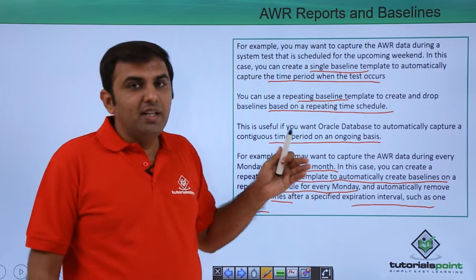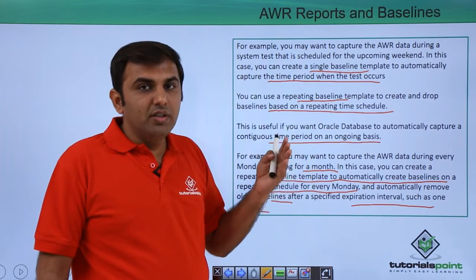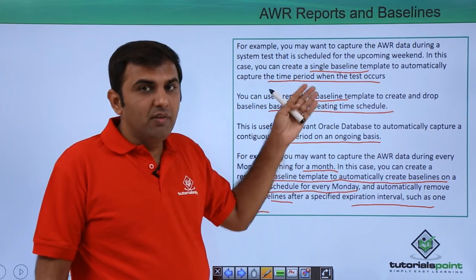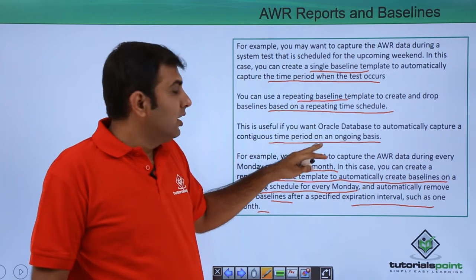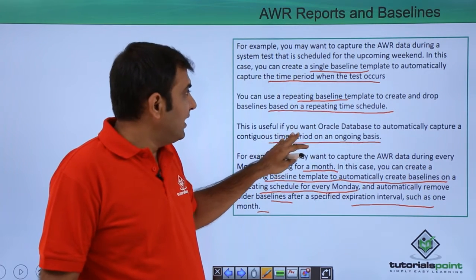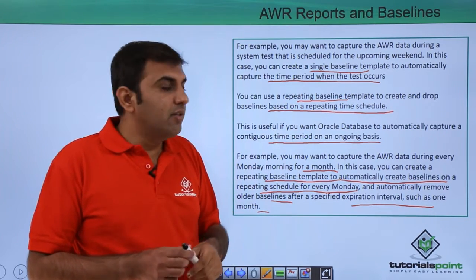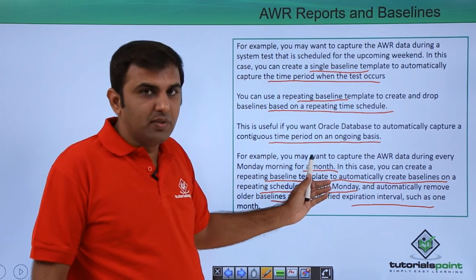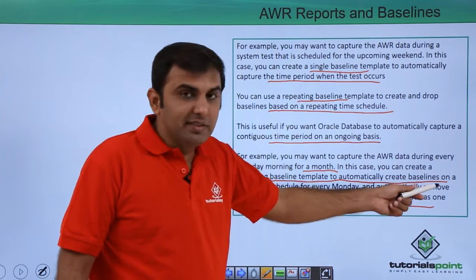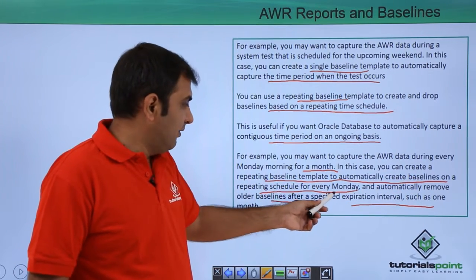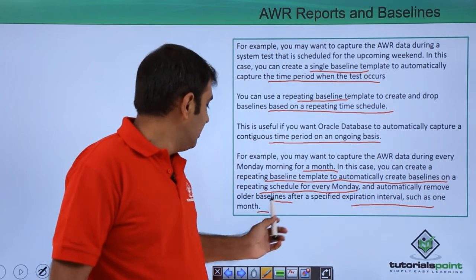So there are two options: single and repeating. If you want a one-time capture — for example this Sunday — you use the single baseline specifying where the data will be stored. For the repeating baseline, it will repeat — for example, every Monday — storing your application testing data, creating the baseline on every Monday and automatically removing older baselines after a specified expiration interval such as one month.